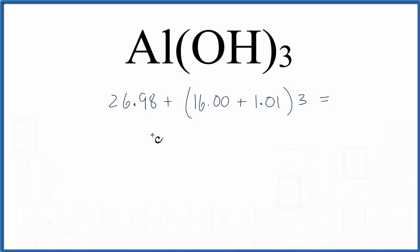When we do that, we get 26.98 plus 51.03 grams per mole, and the final molar mass is 78.01, put our units here, grams per mole. So that's the molar mass for Al(OH)₃ aluminum hydroxide.